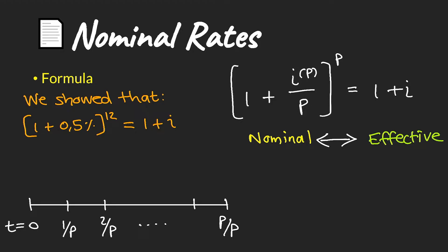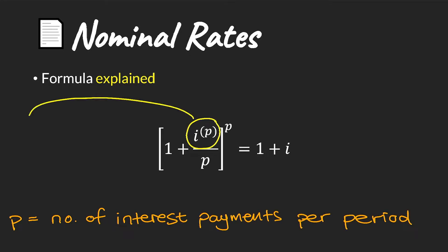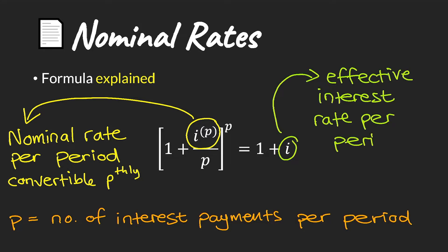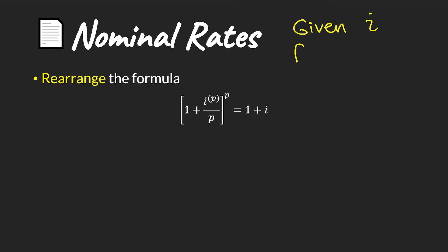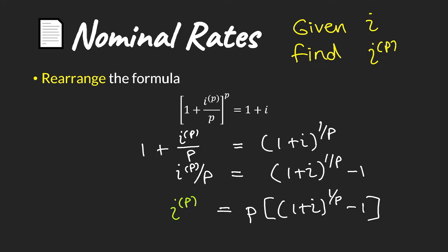This formula is something you need to memorize, because this is how you move from nominal interest rates to effective interest rates. p is our number of interest payments per period, or the number of compounding periods. i^(p) by itself is our nominal rate per period convertible pthly. i is our effective interest rate per period — generally per annum. i^(p)/p is our effective rate pthly. Given an effective rate, we can find the nominal interest rate by rearranging: raise both sides to the power of 1/p and move p to the other side to get i^(p).